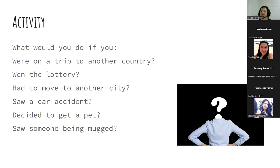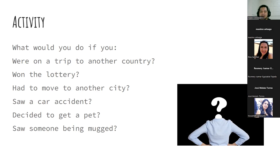Let's see if we remember how to answer these questions. Maximo, what would you do if you were on a trip to another country? — I would visit the cathedral. — Which cathedral? — The most important in the city. — You like to visit cathedrals? — Yes. — Very good — they are really beautiful, really big, and a lot of history. Maximo, choose someone else.